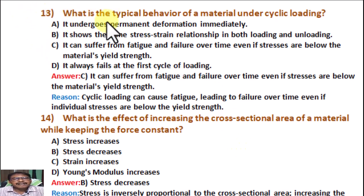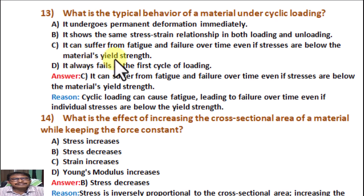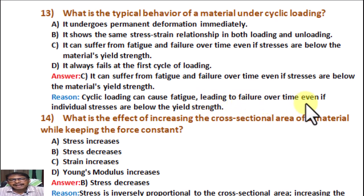Question number 13. What is the typical behavior of a material under cyclic loading — that means one time loading upward, one time loading downward, loading and unloading? Option A: It undergoes permanent deformation immediately. Option B: It shows the same stress-strain relationship in both loading and unloading. Option C: It can suffer from fatigue and failure over time even if stresses are below the material's yield strength. Option D: It always fails at the first cycle of loading. Correct answer is C. Reason: Cyclic loading can cause fatigue, leading to failure over time even if individual stresses are below the yield strength.